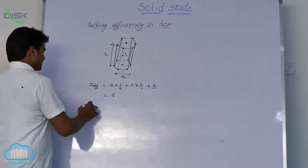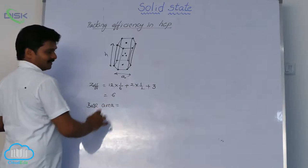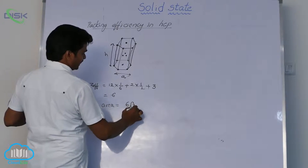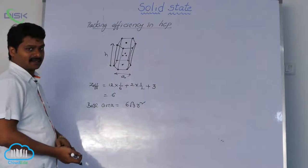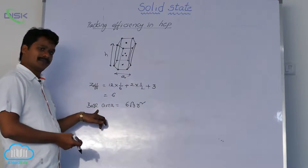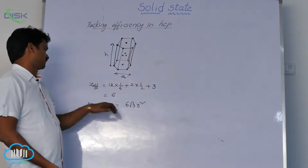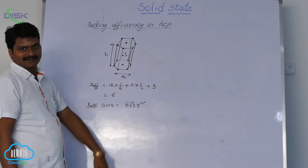So here base area is, we get this base area 6 root 3 R square. Similarly height. Actually some mathematical calculation is involved in the base area calculation, but here directly I am giving the formula. Base area is hexagon.